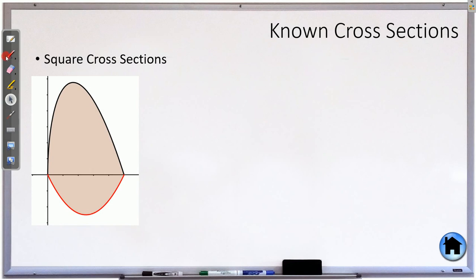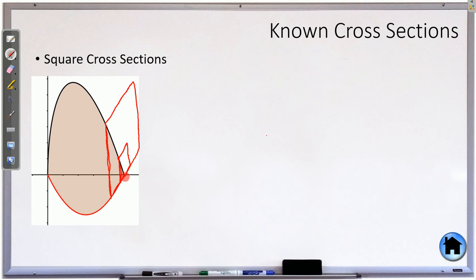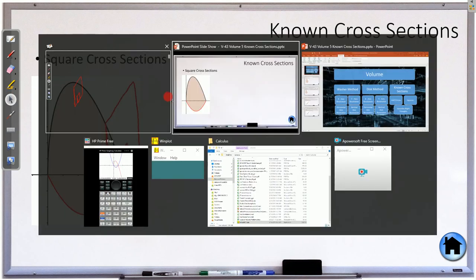Here we have a region and we're going to build cross sections off of it — not a circle this time. Instead of a circle, we're going to do squares. First, a quick visual of what this might look like with a bad drawing. We're going to take the distance between these two curves and turn that into a square.